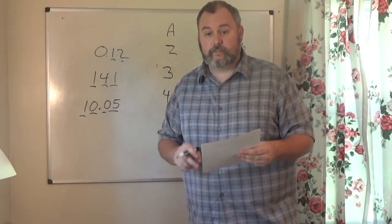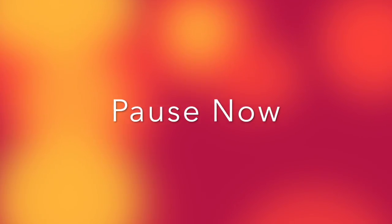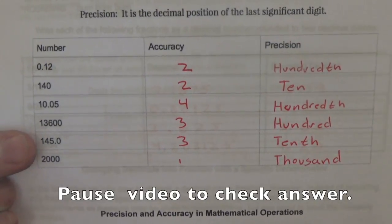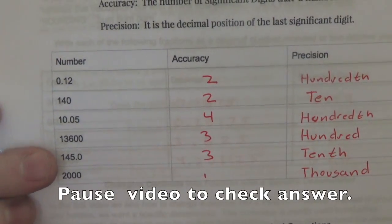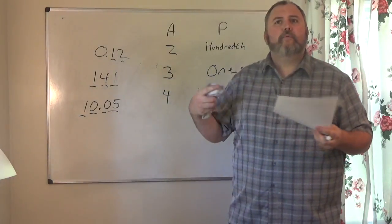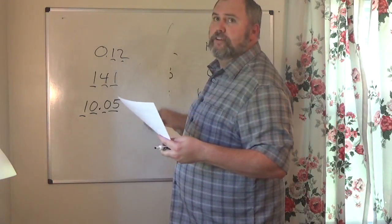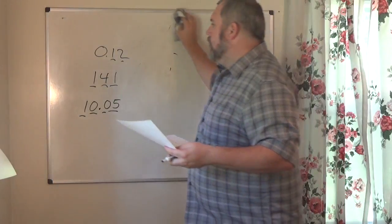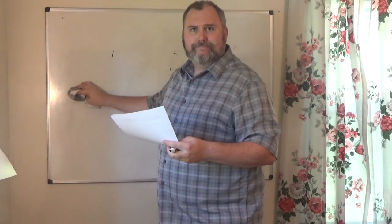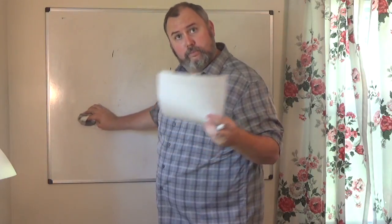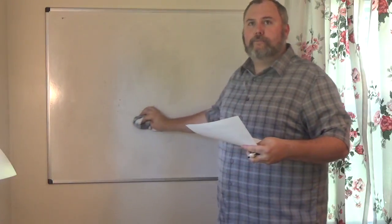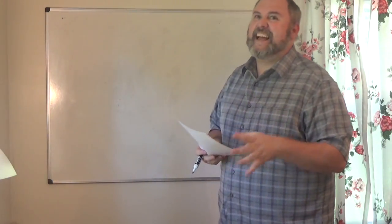I want you to do the next three on your own in that chart. Pause the video — when you come back, I'll show you your answers. Alright, these are your answers — if you didn't get those and have questions, you know how to reach me. When you understand what significant digits are, accuracy and precision are fairly easy to understand. However, math makes things harder because we like to do that to people.